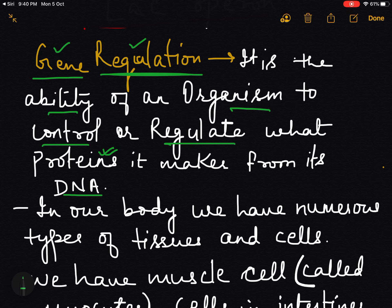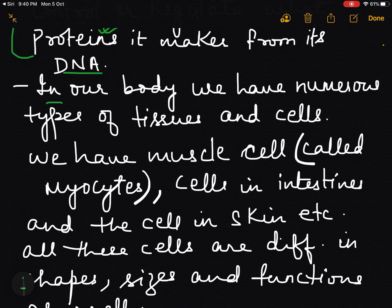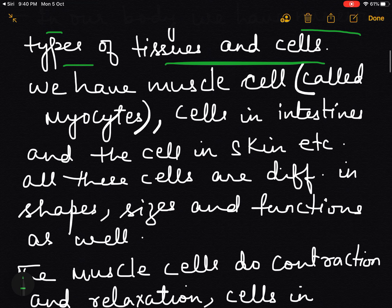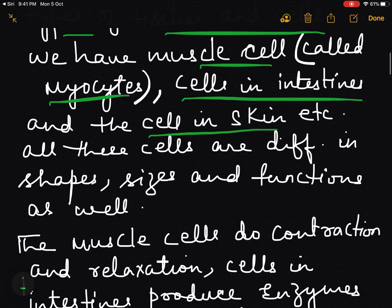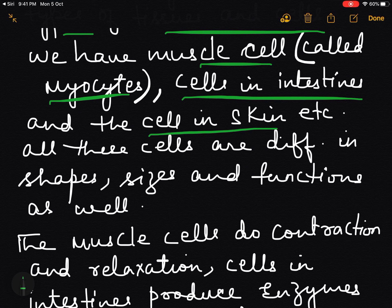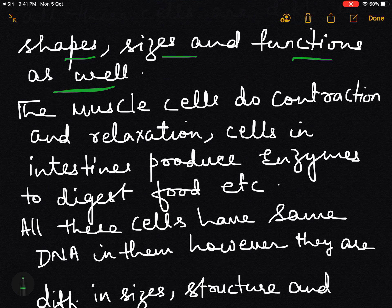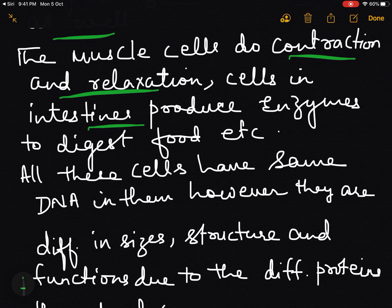In our body, we have numerous types of tissues and cells. We have muscle cells called myocytes, cells in the intestine, cells in the skin - the body is made up of many cells and tissues. All these cells are different in their shape, size, and functions. Muscle cells contract and relax, but cells in the intestine produce enzymes which help in digestion of food.